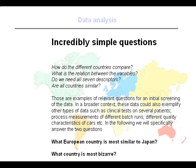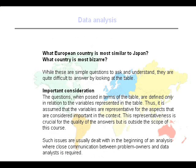Some very simple questions one could ask of these data would be: what European country is most similar to Japan, or what country is the most unusual one? These are very simple questions, but they're difficult to answer from the raw data. An important note is that when we do data analysis, we are getting answers in terms of the data that we have — we are building empirical models based on the available data. So we are not doing an exhaustive analysis of what differs between countries; we are only doing that with respect to the variables we have included. It's very important to have the right data that are relevant for the problem in question.